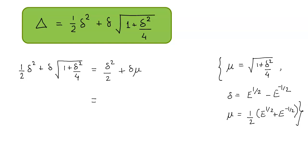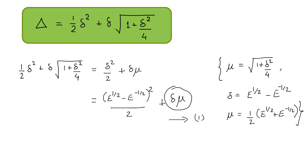Delta squared upon 2 can be written as e raised to power 1/2 minus e raised to power minus 1/2 whole squared upon 2, plus delta into mu. At this step we need to notice that the term delta into mu can be expressed in two ways. Either we can write the values of delta and mu in terms of shift operators and multiply them, or we can use the relation mu times delta equals 1/2 times the forward difference operator plus backward difference operator.